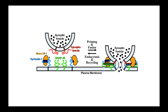When the action potential comes down the axon into the axon terminus, it causes those voltage-gated calcium channels to open and allows calcium into the axon terminus. Calcium is critical for the vesicles containing neurotransmitter to dock with the membrane and release neurotransmitter. If you block those calcium channels, you don't get neurotransmitter release. There are proteins on the vesicle and embedded in the membrane, and their docking depends upon calcium and ATP.